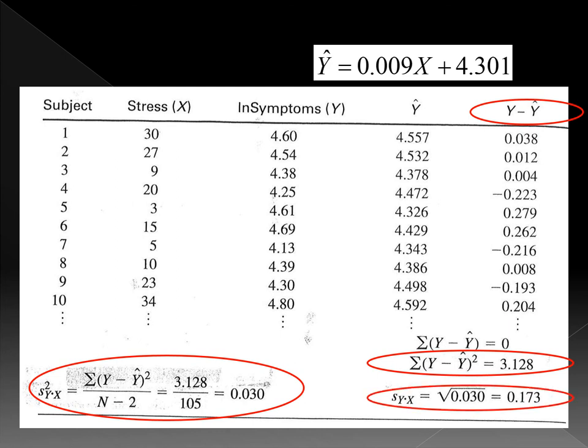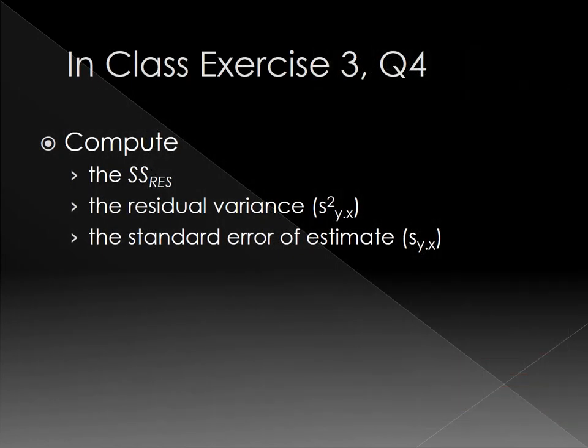Now pull out in class exercise 3, work on question 4. In this question, it asks you to compute the sum of the squares for residuals, then compute the residual variance, then the standard error of estimate.